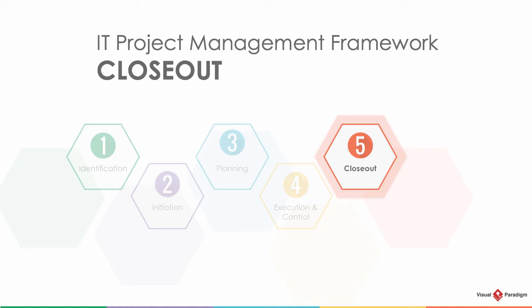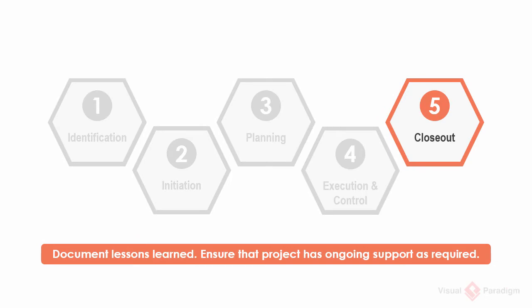Welcome to the final phase of the IT project management lifecycle: the closeout phase. The previous phase, the execution and control phase, ends with the acceptance of project deliverables. In this phase, the project team will document the lessons learned from the project and transfer the deliverables to operation staff who will use and maintain the deliverables as an ongoing activity.